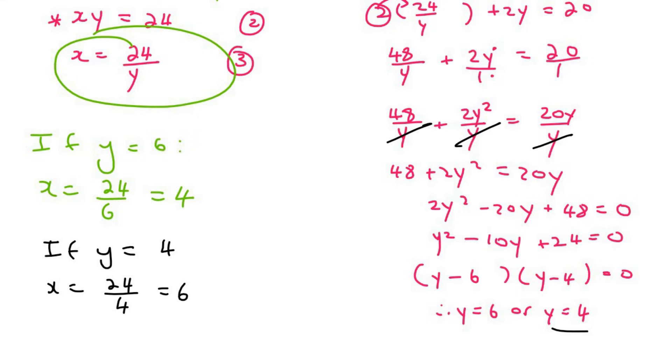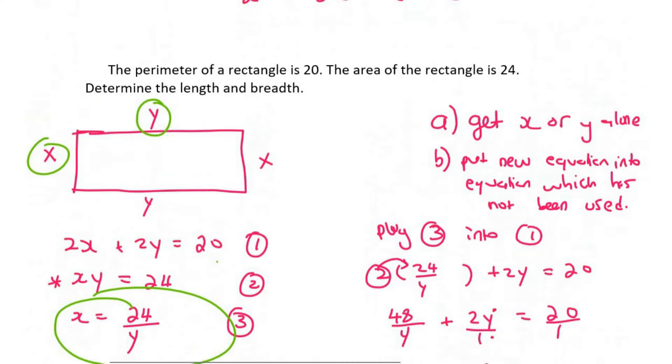So our final answers will be x equals 4 and y equals 6. That could be your answer for this rectangle. Or x could be equal to 6, and y would be equal to 4.